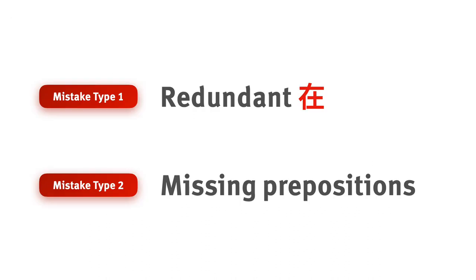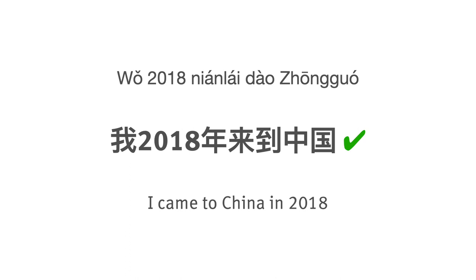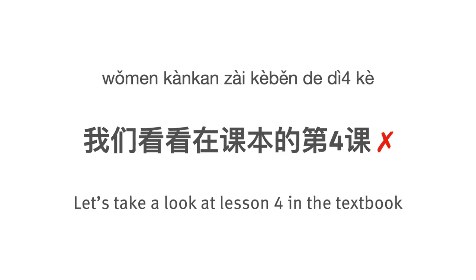Alright, so those are the two types of mistakes with 在. Now let's do some practice and see if we can detect mistakes with 在 and correct them. Number one — what's the problem with this sentence? 我在2018年来到中国. We should remove the 在 and say 我2018年来到中国. With years, we do not use 在 usually.